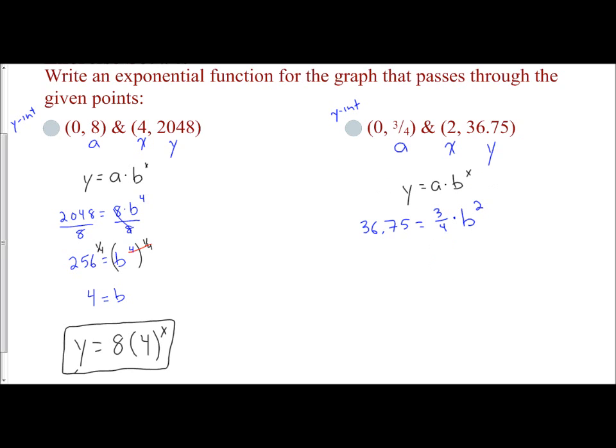So to get rid of, multiply by 3/4ths, I'm going to multiply both sides by the reciprocal, which is 4/3rds. And that's going to give me 49 equals b squared.